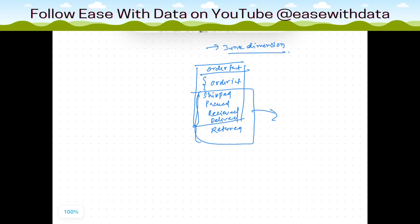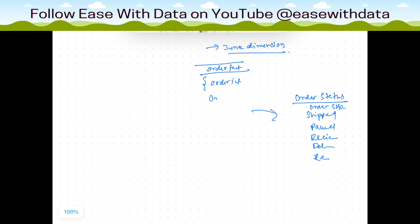So what we will do is we'll create one dimension called order status. We'll have all these columns - shipped, packed, received, delivered, and returned - in this, other than order status ID. And then we will just populate order status ID here in the fact. We'll connect this order status ID with the order fact. So what happens is we are removing the junk information from order fact and we are creating one more dimension which is a junk dimension.